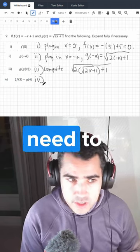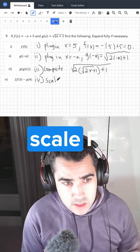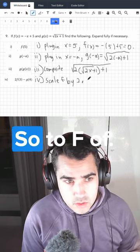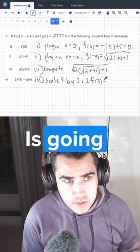Now for the fourth part, we need to know how to scale a function. We're going to scale f by 2 like this. So 2f of 3 is going to be minus 2x minus 2 times 3 plus 5.